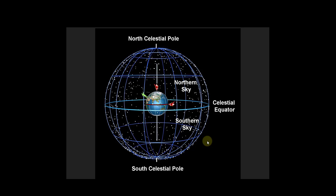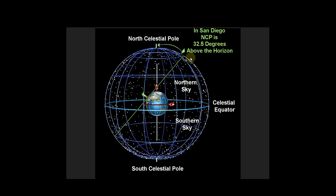This is me in San Diego — 32 and a half degrees north. Santa is at 90 degrees north latitude, the equator Santa is at zero degrees latitude, and I am at 32 and a half degrees latitude. My horizon looks something like this. How many degrees above my horizon is the north celestial pole? Since I live in San Diego at 32 and a half degrees north, the north celestial pole is about 32 and a half degrees above the horizon.